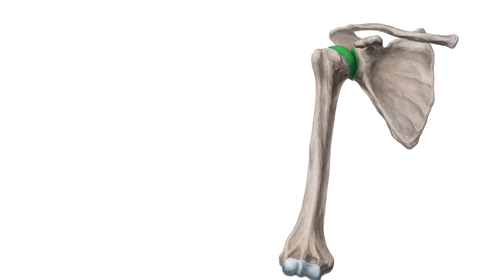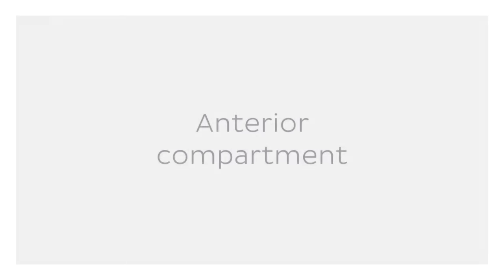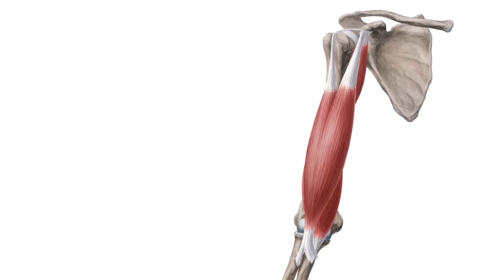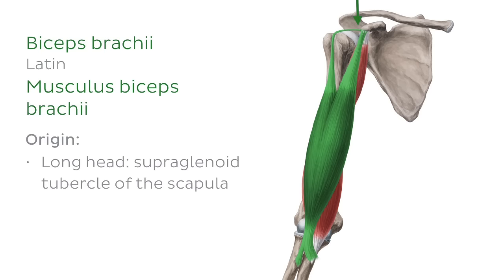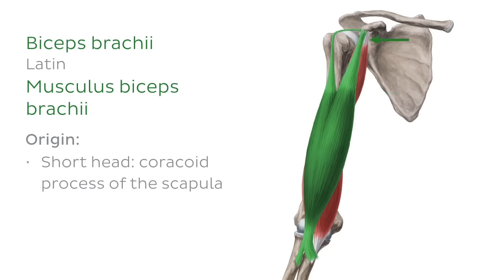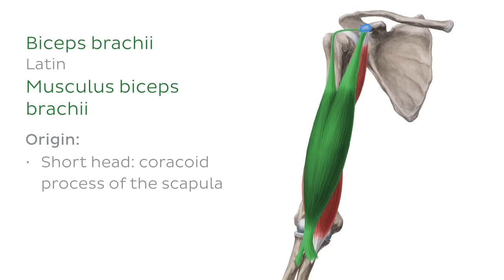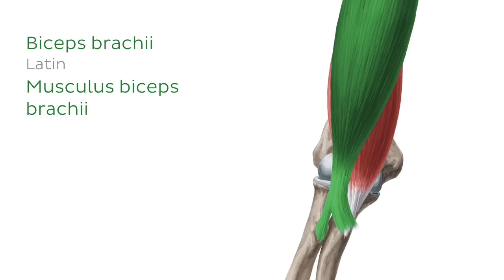Let's move on to the muscles of the arm, starting with the anterior compartment. The anterior compartment consists of three muscles, and the first is the biceps brachii. As the name suggests, this muscle has two heads with different points of origin — the long head originates from the supraglenoid tubercle of the scapula, and the short head originates from the coracoid process of the scapula. Both heads unite to form a single large muscle belly, which inserts at the radial tuberosity. It also has a soft tissue attachment to the deep fascia of the forearm through the bicipital aponeurosis.